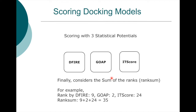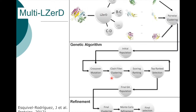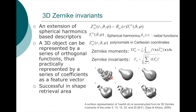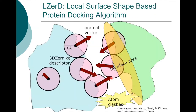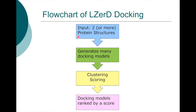So that's it about LIZARD: the input is two structures, generate models, clustering, scoring, and then models are ranked by the rank sum score.